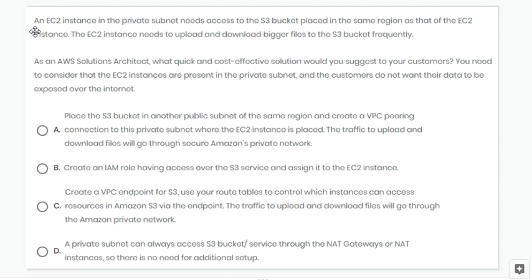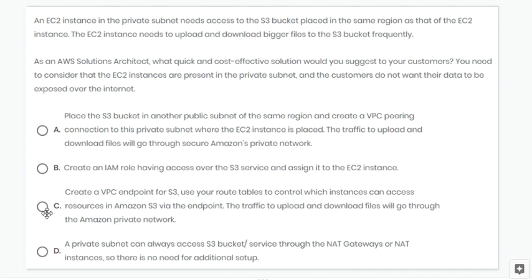Next question: two instances are in a private subnet and need access to S3 to upload and download files. Use a route table to control access. Option C is correct.